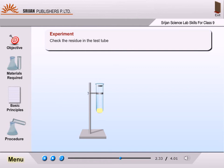Check the residue in the test tube. The residue in the test tube is yellow when cold and reddish brown when hot. The residue is lead oxide.